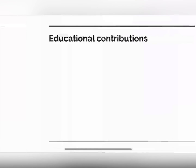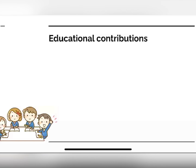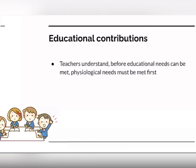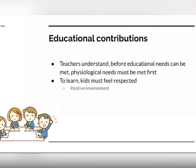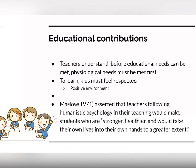So how does this apply to teaching? It actually applies a lot in the classroom. Teachers realized that before educational needs can be met, physiological needs must be met first. So if a student isn't learning, it's very probable that their other needs aren't being met — they might be hungry or not feel safe, or perhaps things at home that the teacher can't control. It also changed the classroom environment, because to learn, kids must feel respected and have a positive environment where esteem needs are met; otherwise, learning can't happen. Learning takes place in the self-actualization category. Maslow asserted that teachers following humanistic psychology would make students who are stronger, healthier, and would take their own lives into their own hands to a greater extent. That is my presentation — I hope you enjoyed.